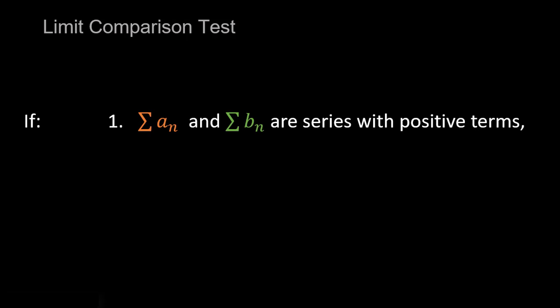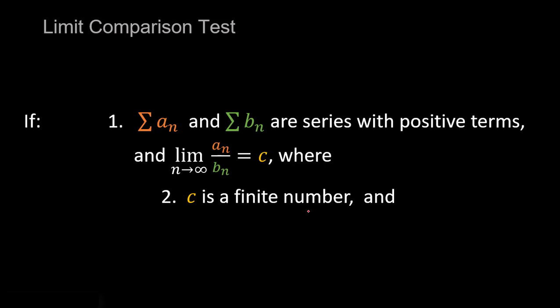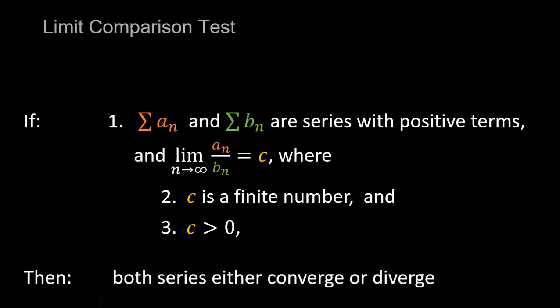To summarize: we discussed the limit comparison test, and found that if the series of a sub n and the series of b sub n are both series with positive terms, and we find that limit equal to c where c is a finite number greater than zero, then we can determine that both series either converge or diverge — they will behave similarly with regards to convergence or divergence. That is the limit comparison test.